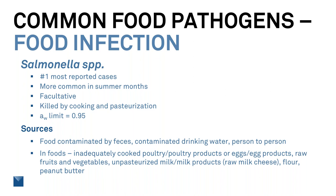Peanut butter and flour are part of the low moisture food group, generally well below 0.85, so salmonella present cannot grow at that point. However, the problem is they're additives to other things. When you add flour to make a batter or peanut butter into something else, you've introduced it to a high water activity environment and salmonella will start to grow. Dr. Bradley Marks at Michigan State University is working on a database for moisture foods and salmonella if you're interested in contributing.